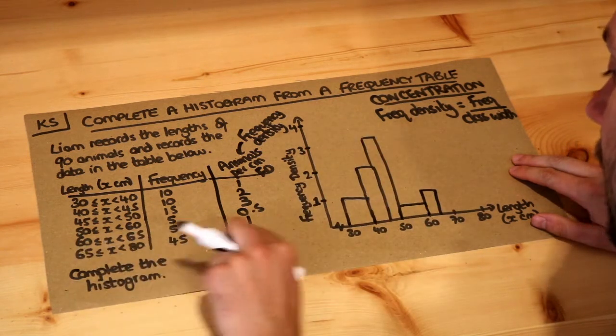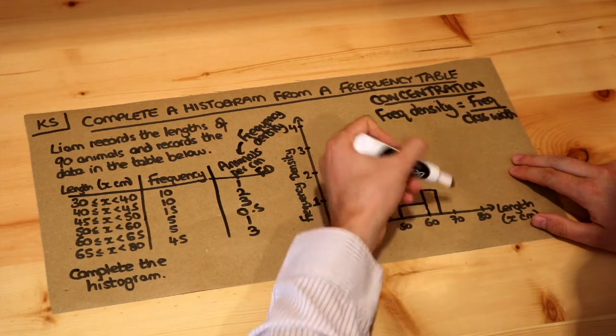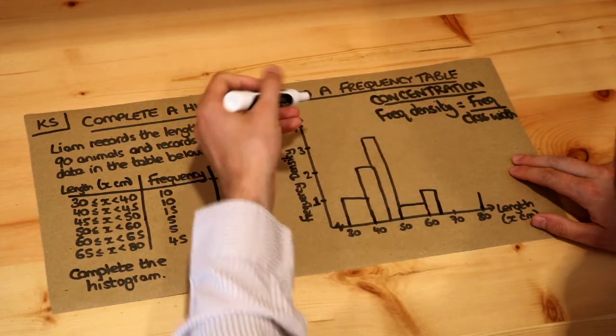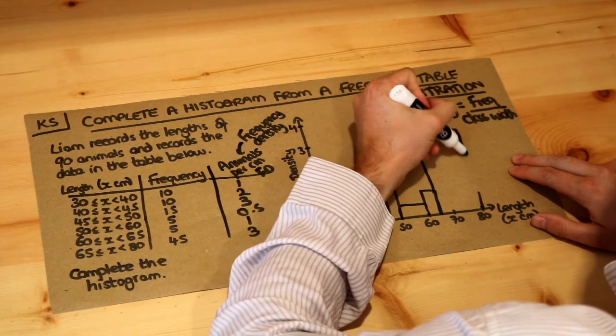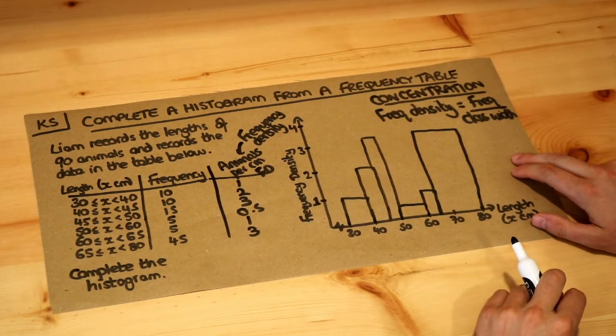And then finally 65 to 80, the frequency density is 3. So 65 which is here to 80, it's going all the way up to 3. So here up to here. And that is the completed histogram.